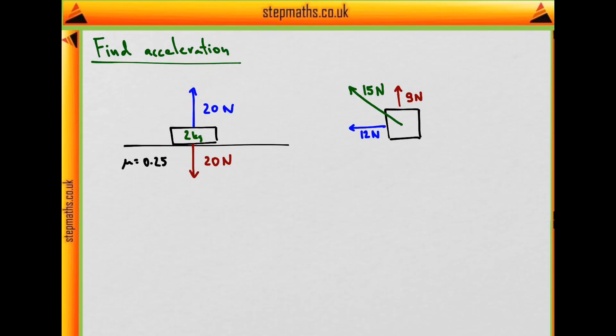And the force of friction, little f, is just the magnitude of the reaction force times the coefficient of friction. 20 times 0.25, that's one quarter of 20, which is 5 Newtons.